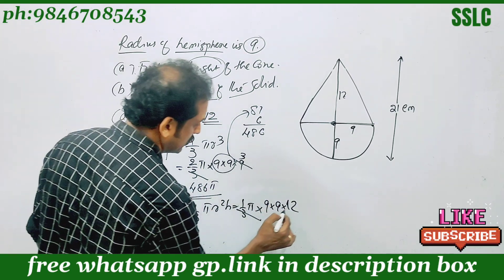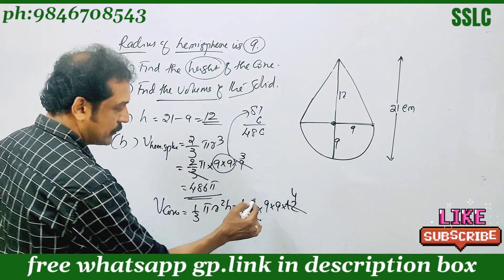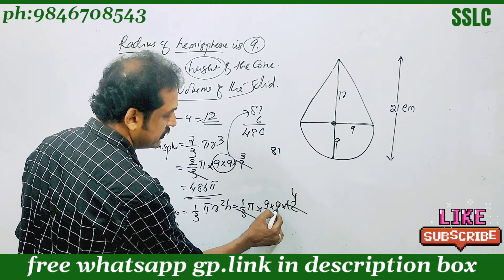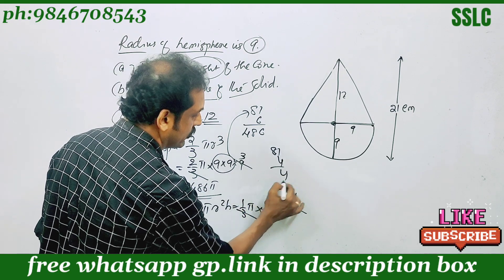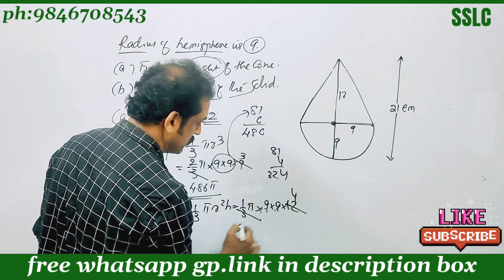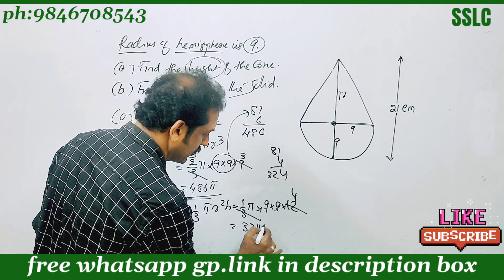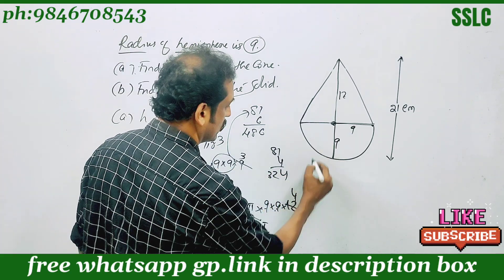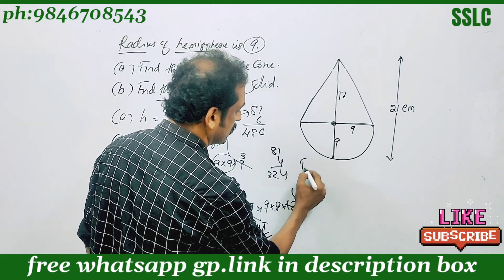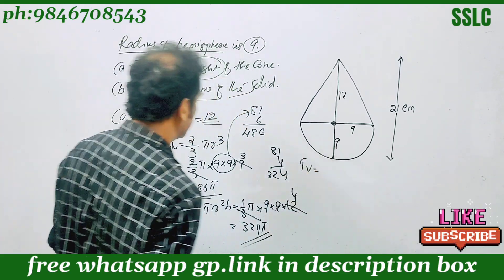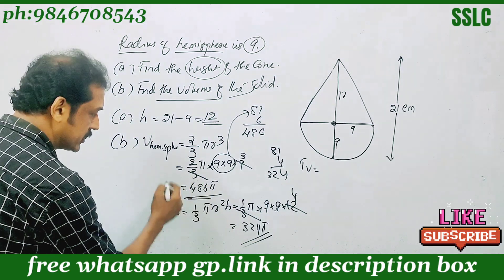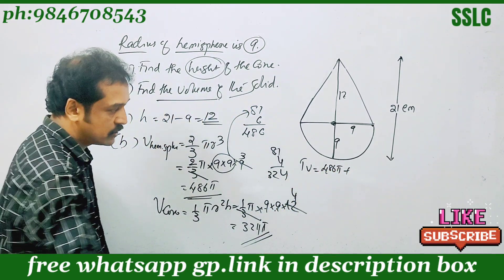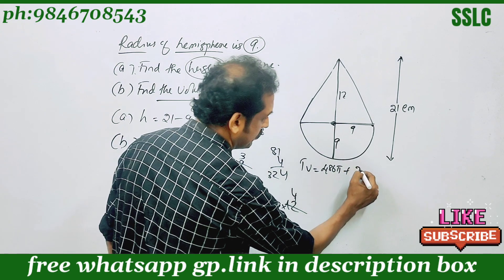This 3 cancels to give 4. Now, 9 into 9 into 4 is 81. 81 into 4 is 324. The answer is 324 pi. But we need the total volume.